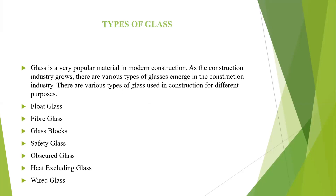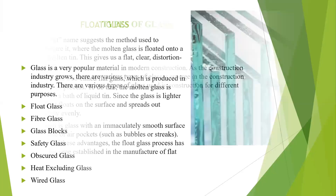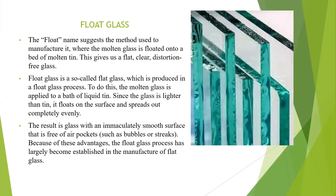Now we are going to see about types of glass. First we are going to see about float glass. Float glass is a clear, flat, defect-free glass. Float glasses, also called flat glasses, are produced as flat glass panels. Molten glass is floated on a bath of liquid. The result is a smooth surface free of air pockets.